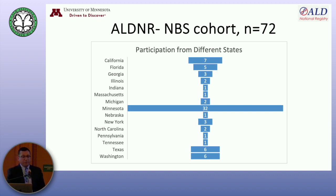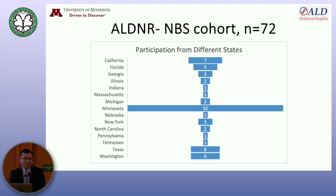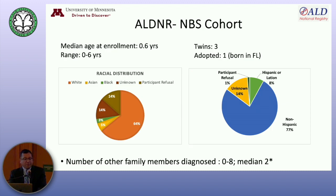Here is some data on our newborn screen cohort on the registry. I'm presenting data for 72 newborns; on the registry right now there are above 80. This is across multiple states — 14 states are listed here. Minnesota has the highest participation because we are sitting right there, but there are more than 15 states participating now. The median age at enrollment — over time, we are getting younger and younger. The initial range was zero to six years. Not every single newborn participates as soon as they are diagnosed; some are older, especially if they are outside Minnesota — when they hear about the registry and get connected to us, that is when they participate.